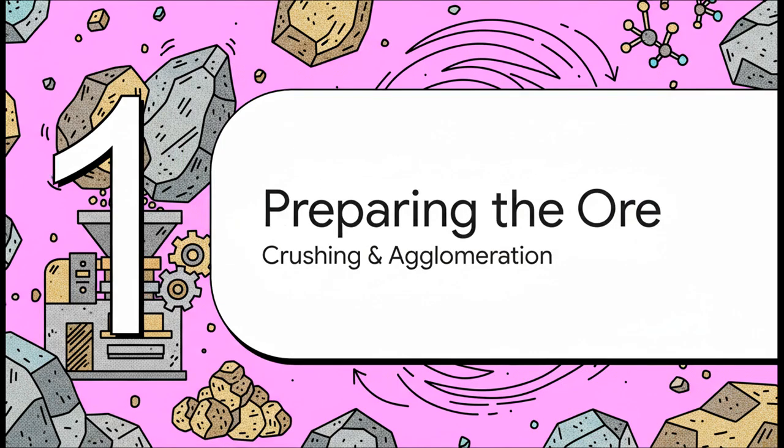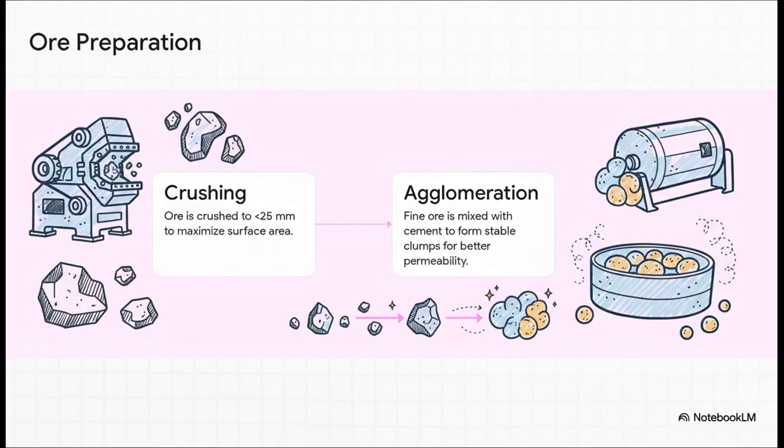All right, so first things first. Before any of the really cool chemistry can happen, the rock itself has to be prepared. This first stage is all about mechanics, just getting the ore into the perfect shape for what's coming next. This prep happens in two really important steps. First, all that ore gets crushed down into little pieces, smaller than an inch across. Why? You're just trying to create as much surface area as possible so the chemicals have more to work with.